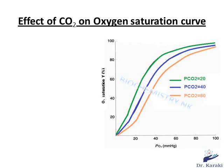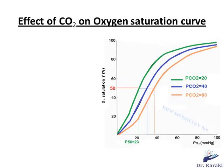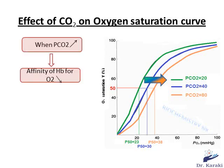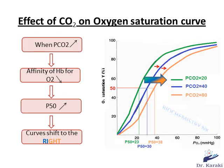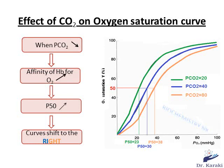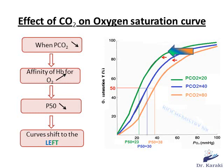As you can see, when the partial pressure of carbon dioxide increases from 20 to 40 to 80 mmHg, the P50 — which is the partial pressure of oxygen at 50% saturation of hemoglobin — increases from 23 to 30 to 38 mmHg respectively, shifting the curve to the right. So when PCO2 increases, the affinity of hemoglobin for oxygen decreases, P50 increases, and the curve shifts to the right. Conversely, when PCO2 decreases, the affinity of hemoglobin for oxygen increases, P50 decreases, and the curve shifts to the left.